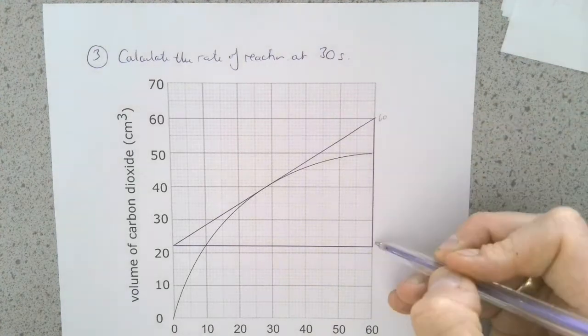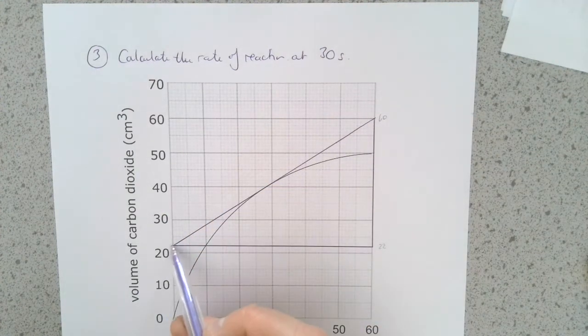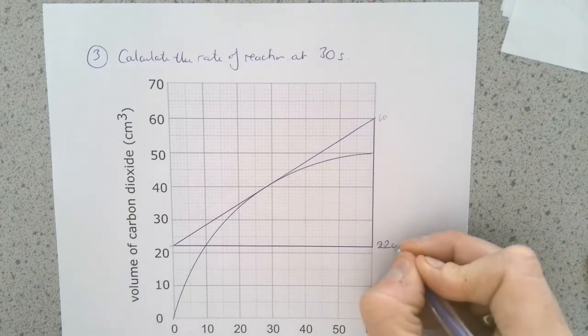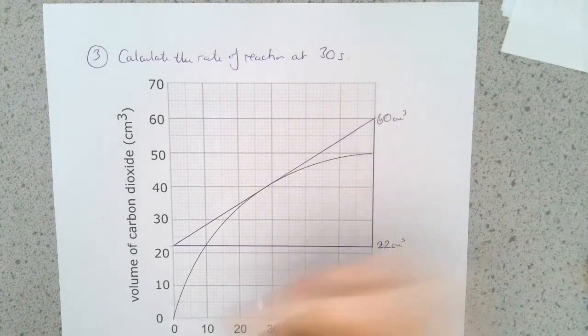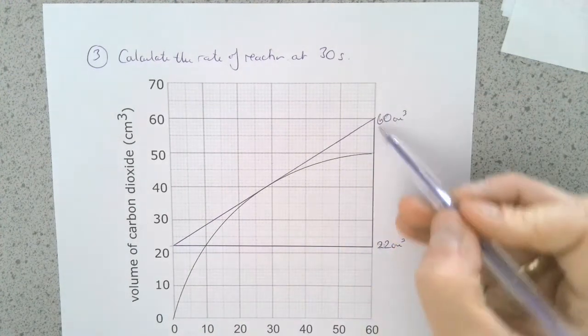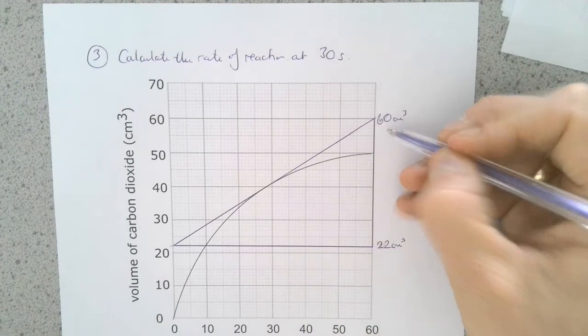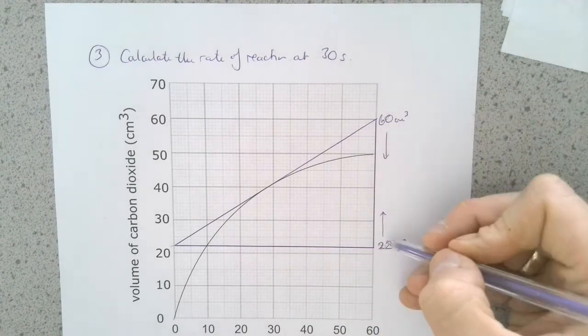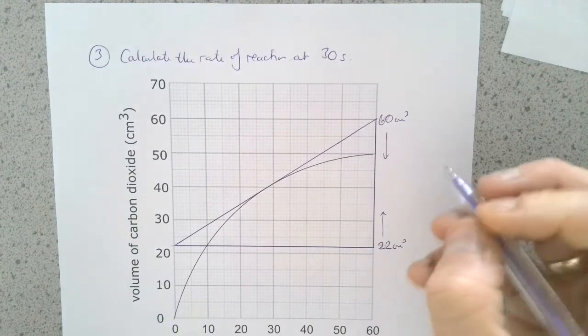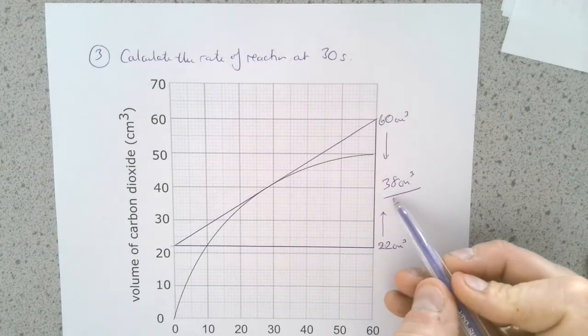So this starts at 22 cubic centimeters and ends up at 60 cubic centimeters. So by making my triangle really big, I've made this calculation a lot easier, especially on the x-axis. So the distance between 60 cubic centimeters and 22 cubic centimeters is 38 cubic centimeters. So that's the volume of carbon dioxide that's been produced.